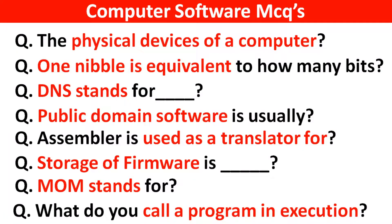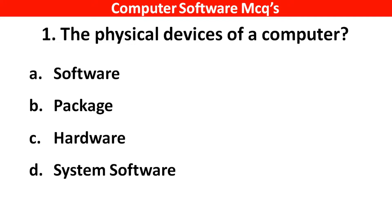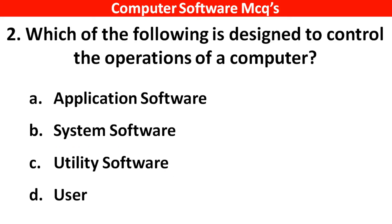Hi guys, aaj ham dekhi ke computer software ke top MCQs. Question number 1: The physical device of a computer. Right answer is option C: Hardware. Next question: Which of the following is designed to control the operations of a computer? Right answer is option B: System software.